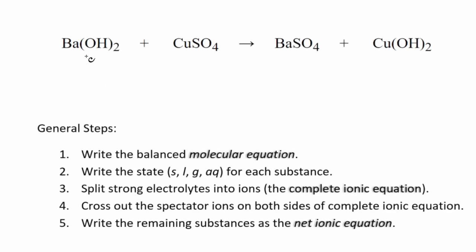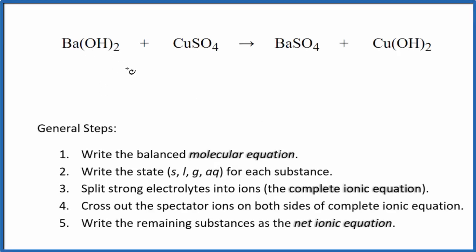In this video, we'll write the net ionic equation for Ba(OH)₂ plus CuSO₄. This is barium hydroxide plus copper sulfate. So the first thing we do with net ionic equations, we balance the molecular equation. It looks like in this case the equation is already balanced, so we don't need to do anything there.